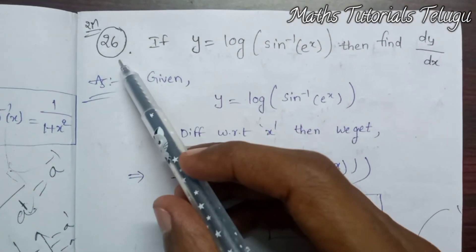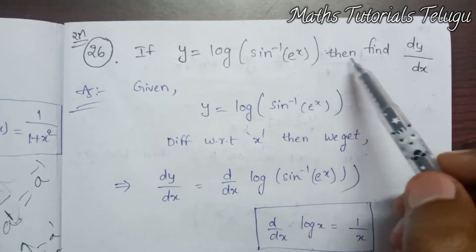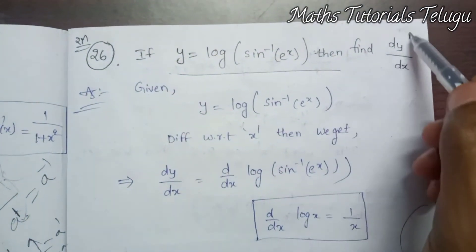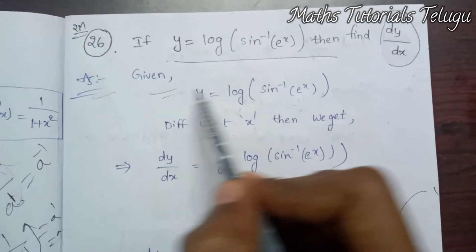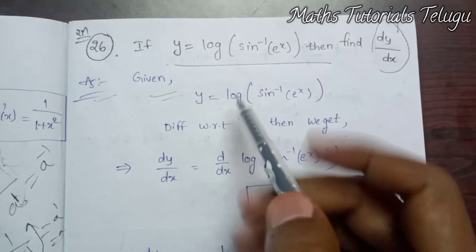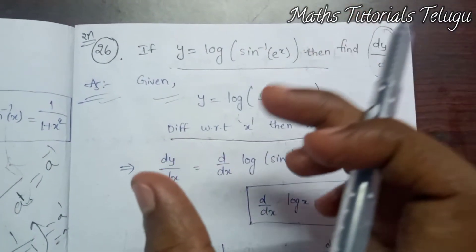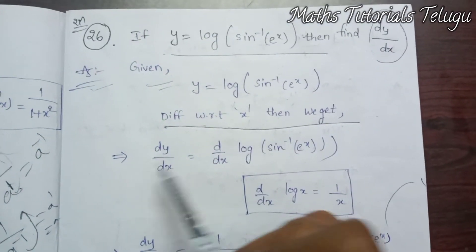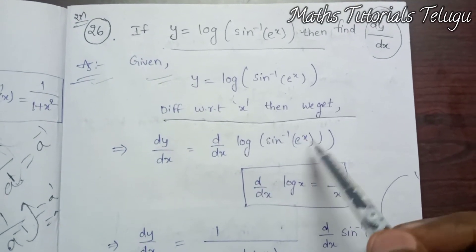Hi guys, this is the 26th problem. If y is equal to log of sine inverse of e power x, then find dy by dx. So y is equal to log of sine inverse of e power x. We differentiate with respect to x on both sides. So dy by dx is equal to d/dx of log of sine inverse of e power x.